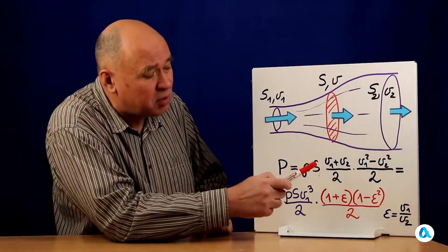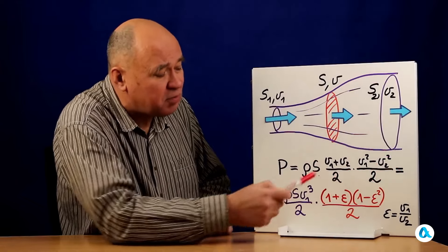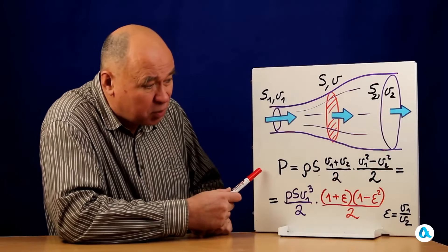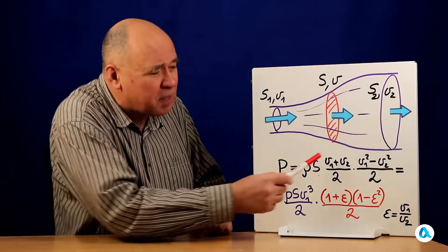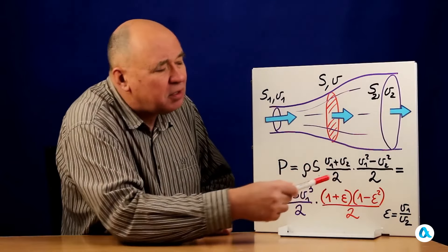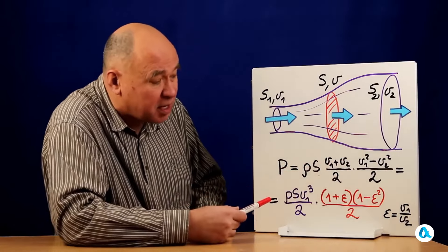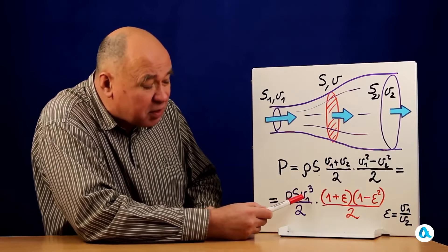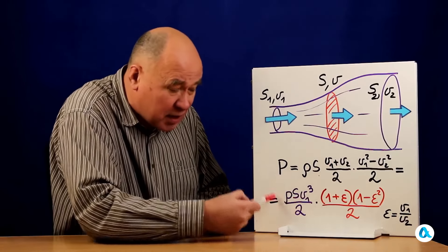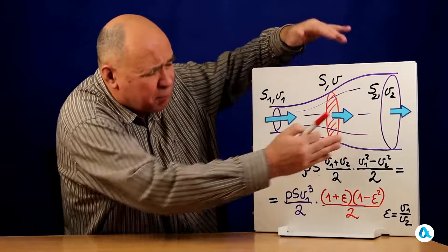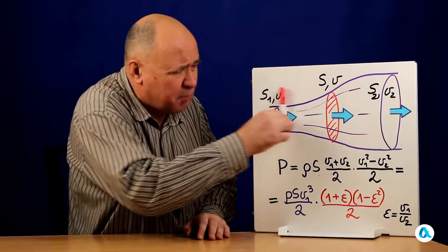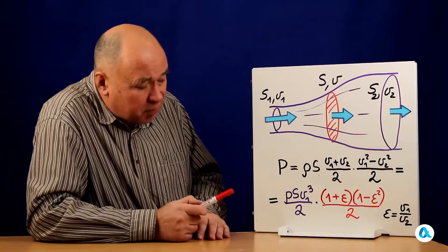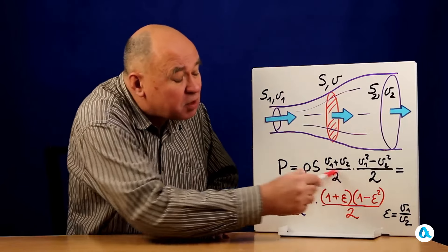Next, I substitute this v₁ plus v₂ divided by 2 into the power formula, and I rewrite this formula in another way. I factor out v₁ from all these multipliers, and I get ρ times s times v₁ cubed divided by 2. What is this? This is the wind power that we introduced at the very beginning, the power of the wind impinging on the disc.